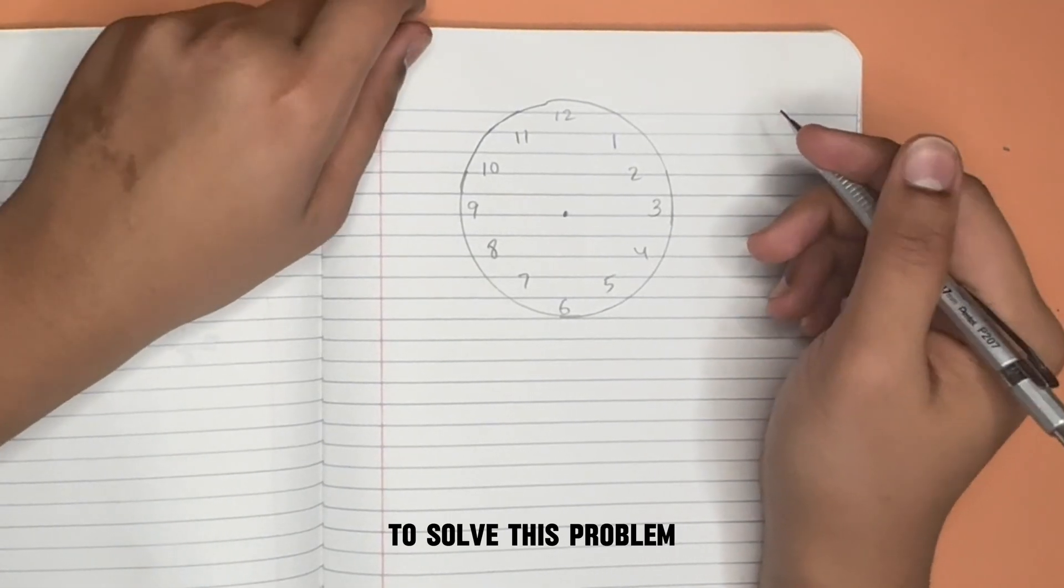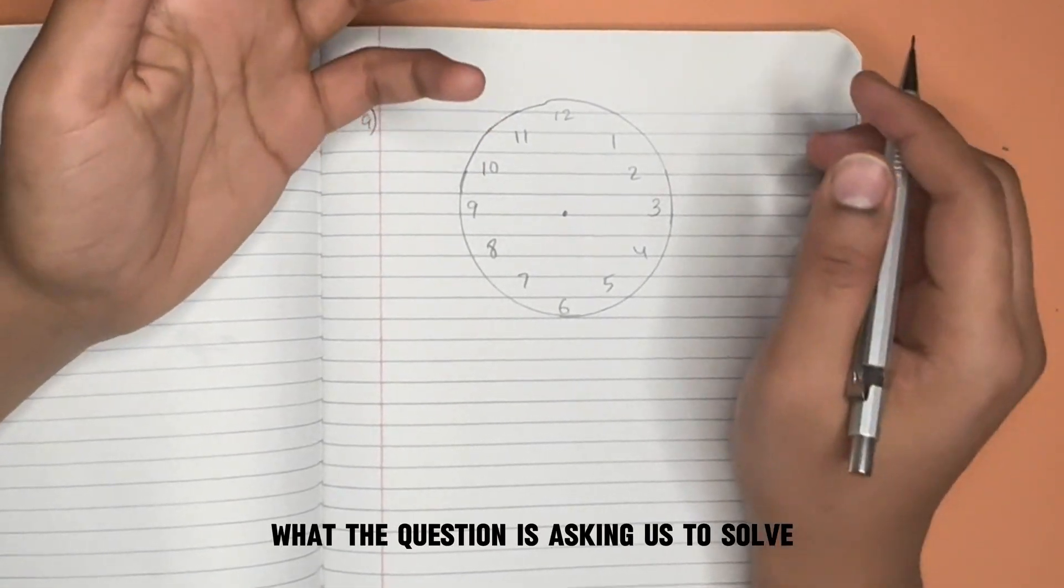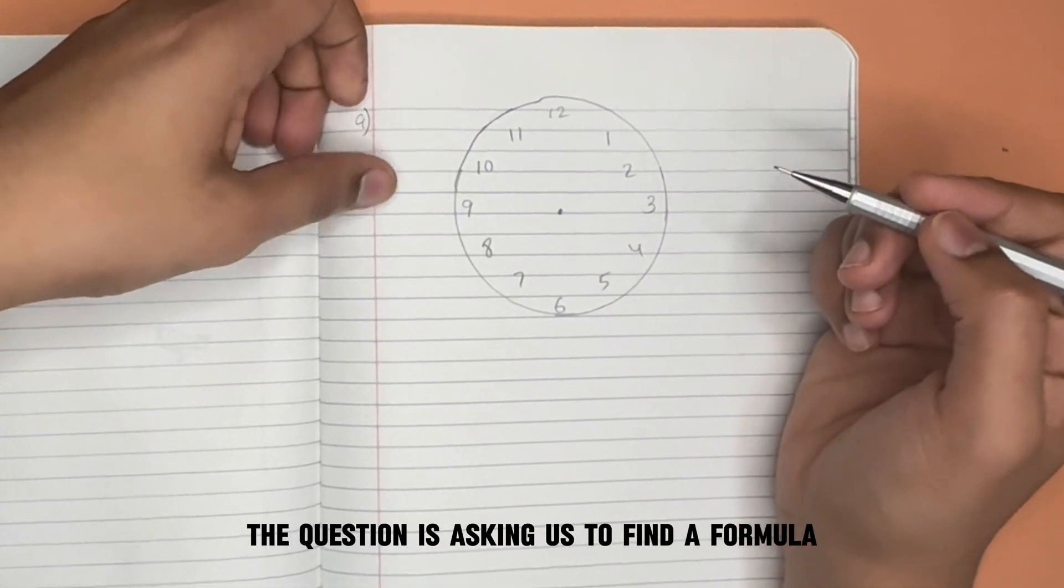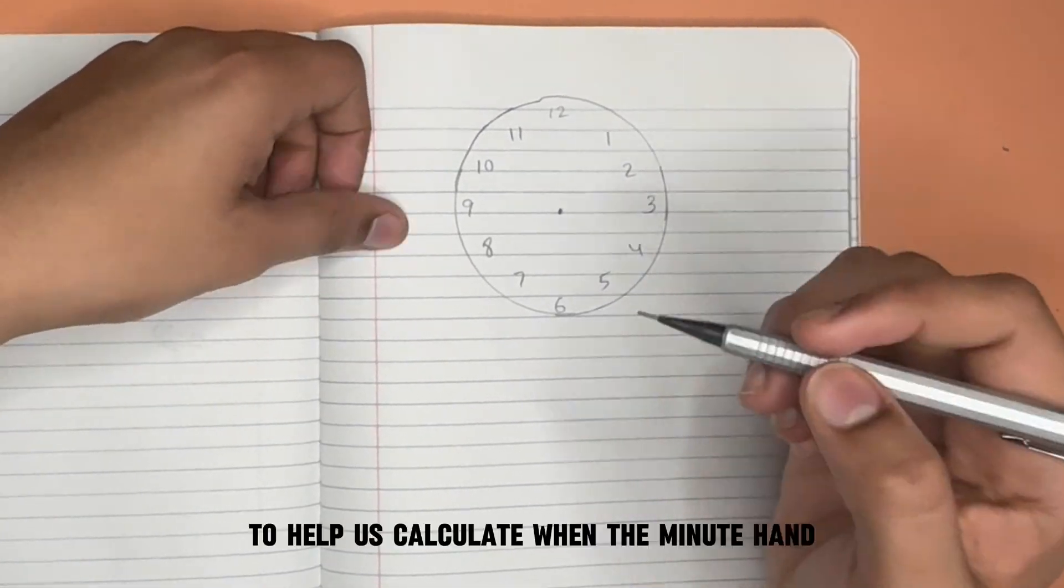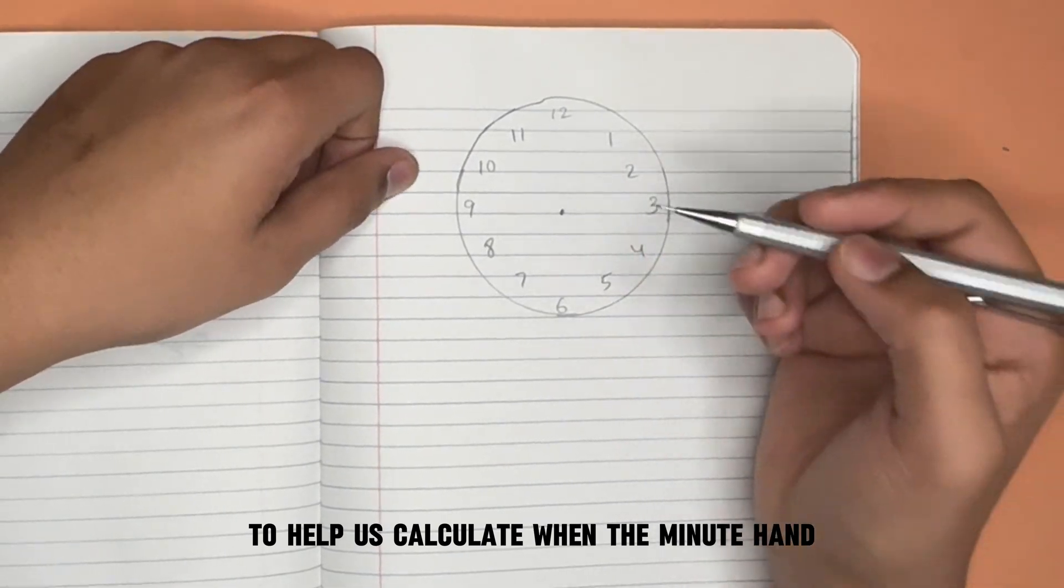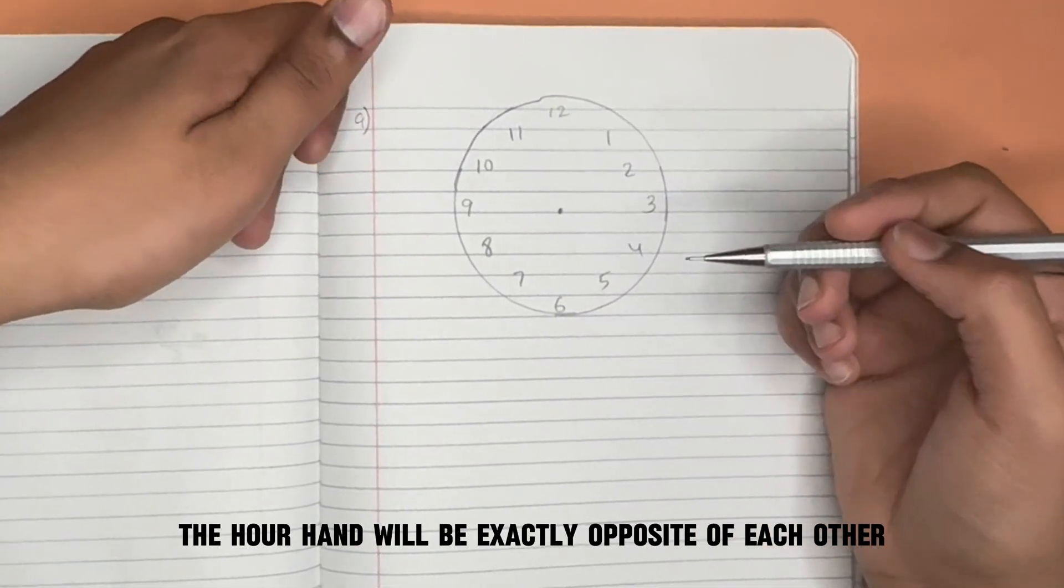To solve this problem, first let's figure out what the question is asking us to solve. The question is asking us to find a formula to help us calculate when the minute hand and the hour hand will be exactly opposite of each other.